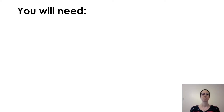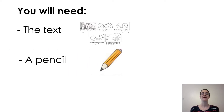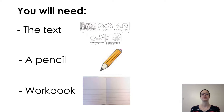Today we're going to start the second part of our reading activity. You will need the text we're going to read today, which is the same as the text from Activity 1, a pencil and your workbook. The text will be displayed on the screen, but if you would rather have it in front of you, you can find it on the Grange website under online learning, in year one — it's the phase three text.